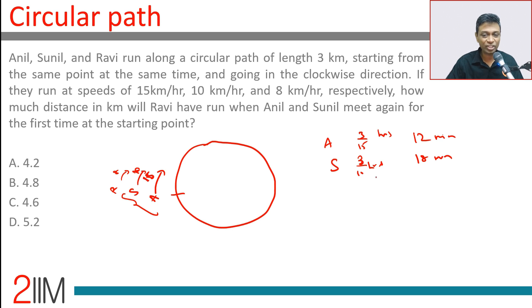We need to find the LCM of 12 and 18. So basically Anil will be at the starting point at time 12, 24, 36, 48. Sunil will be at 18, 36, 54, etc. So at the end of 36 minutes, both will be at the starting point for the first time.